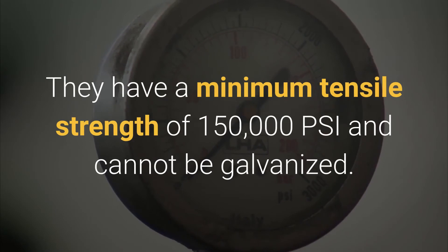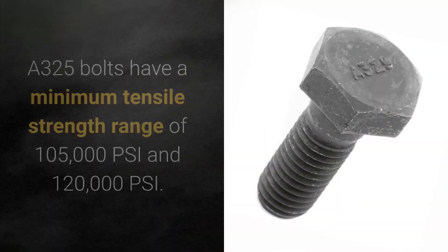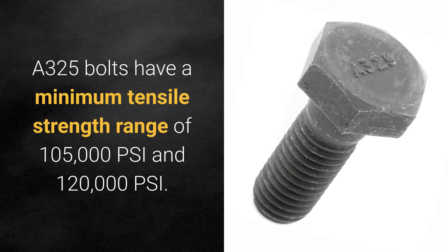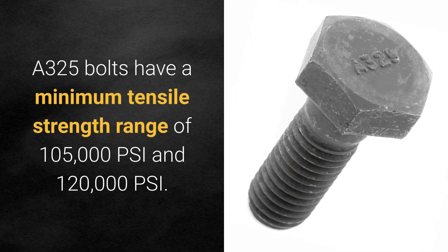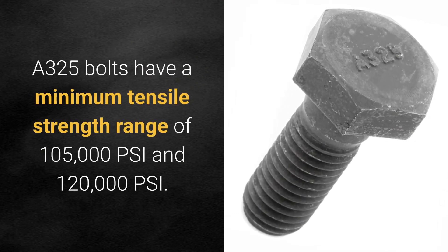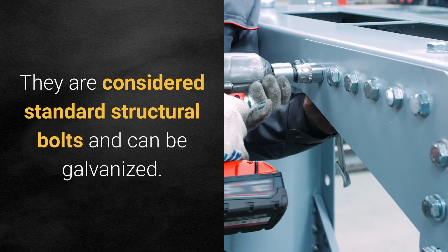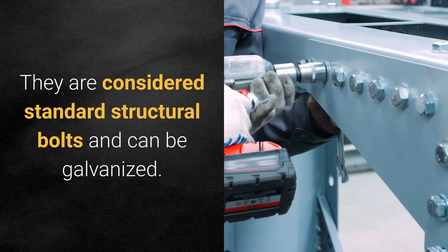A490 bolts have a minimum tensile strength of 150,000 psi and cannot be galvanized. A325 bolts have a minimum tensile strength range of 105,000 psi to 120,000 psi. They are considered standard structural bolts and can be galvanized.